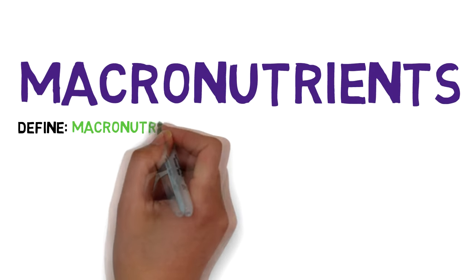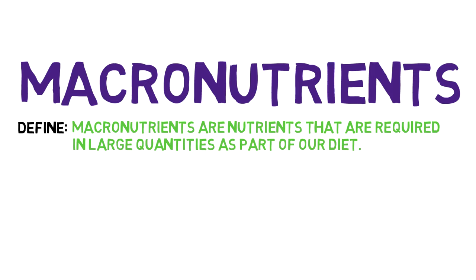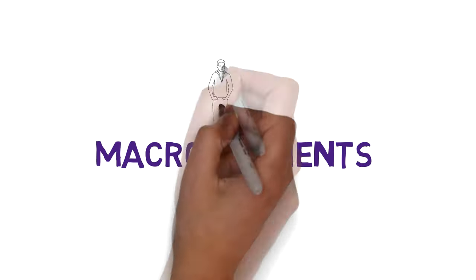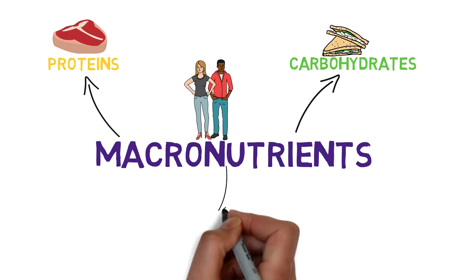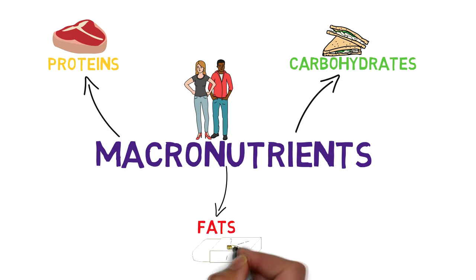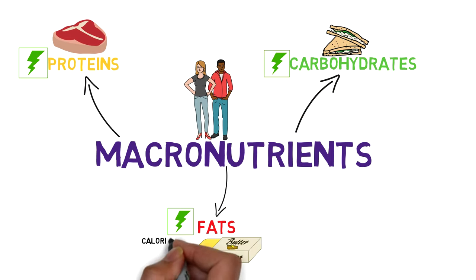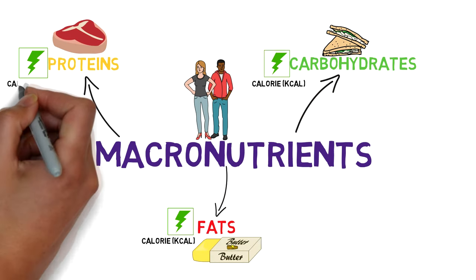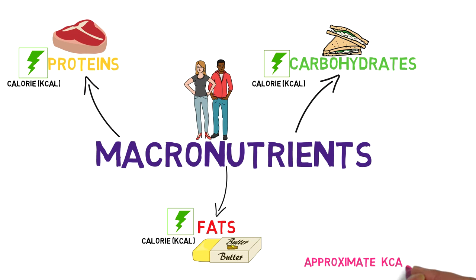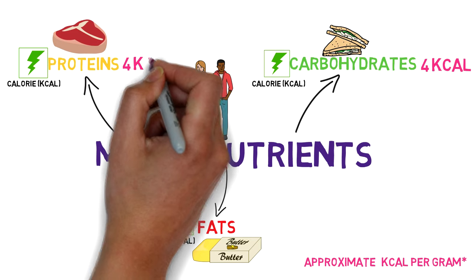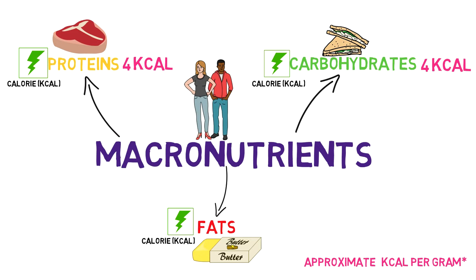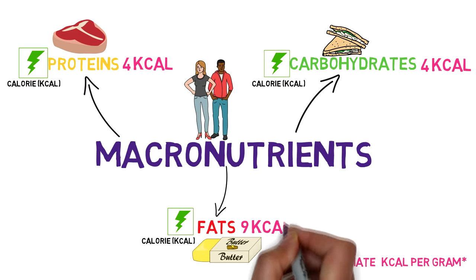Macronutrients are nutrients that are required in large quantities as part of our diet. The three macronutrients required by humans are carbohydrates, proteins and fats. Energy is provided by each macronutrient in the form of calories. The approximate amount of calories each macronutrient provides per gram is as follows: carbohydrates, 4 calories per gram; proteins, 4 calories per gram; and fats, 9 calories per gram.